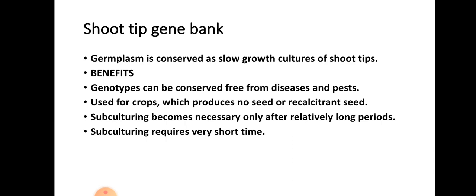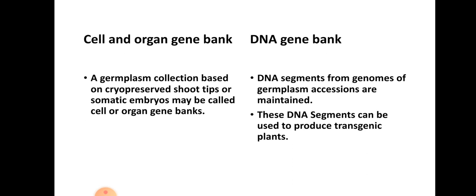In cell and organ gene banks, germplasm collections are conserved through cryopreservation — storage at minus 196 degrees Celsius in liquid nitrogen. The cells and organs are stored in this way, and this is known as a cell and organ gene bank.